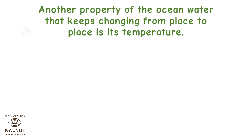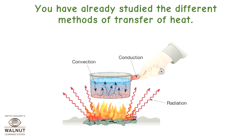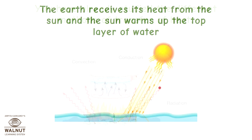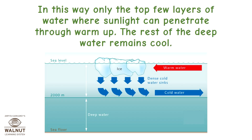Another property of ocean water that keeps changing from place to place is its temperature. The earth receives its heat from the sun, and the sun warms up the top layer of water. As the top layer heats up, it expands and becomes light, so it stays at the top. In this way, only the top few layers where sunlight can penetrate warm up, while the rest of the deep water remains cool.